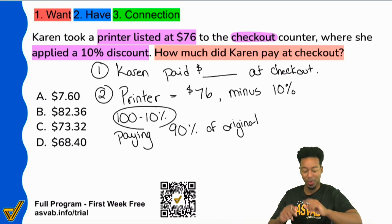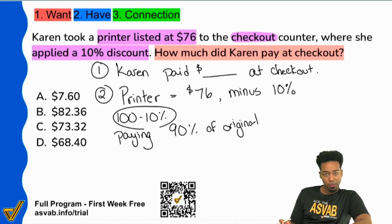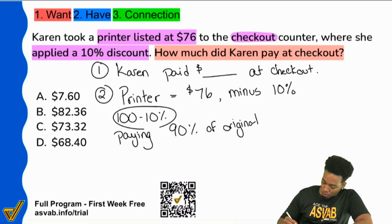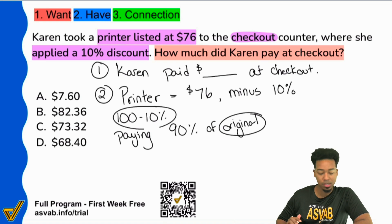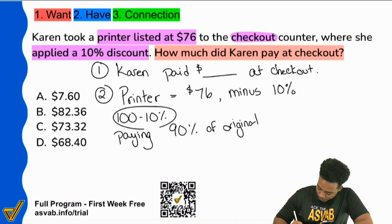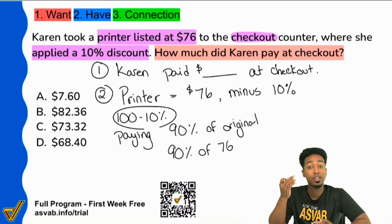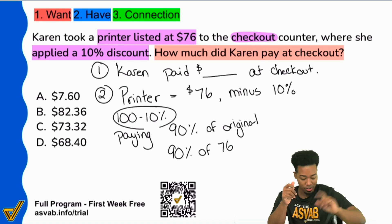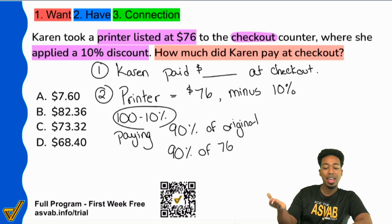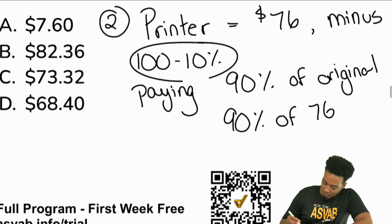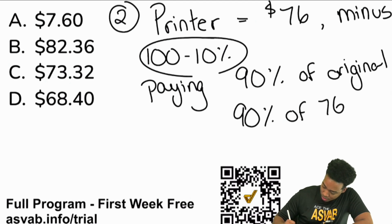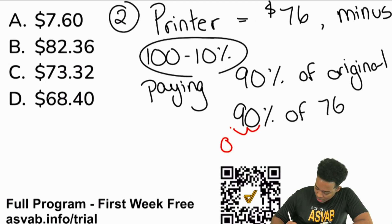You're paying 90% of the original, and the original is $76. So essentially what we're doing is 90% of 76. We can perform the math on that and get the final answer right away. 90% turns into 0.9, so we have 0.9 times 76.